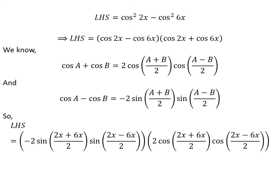Application of the above identities gives us the left hand side of the equation equal to minus 2 times sine of (2x plus 6x)/2 times sine of (2x minus 6x)/2 times 2 times cosine of (2x plus 6x)/2 times cosine of (2x minus 6x)/2.